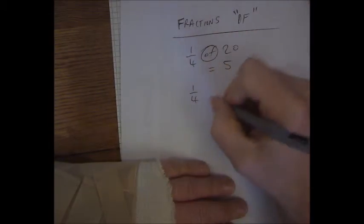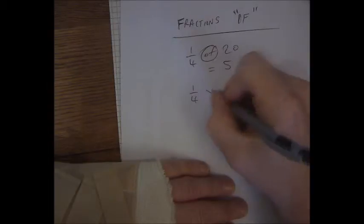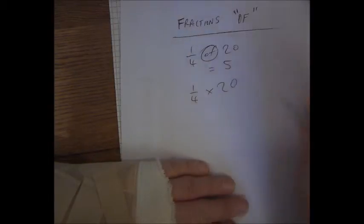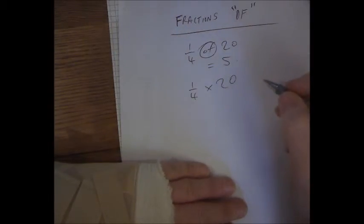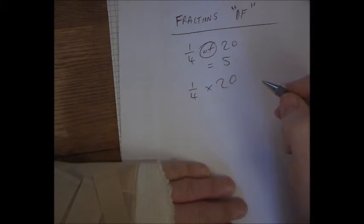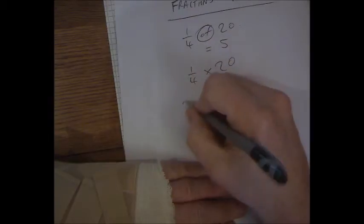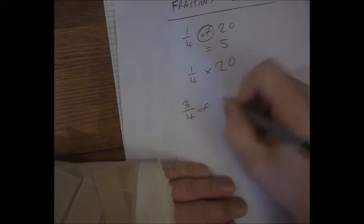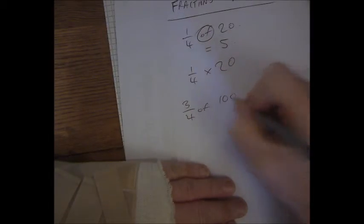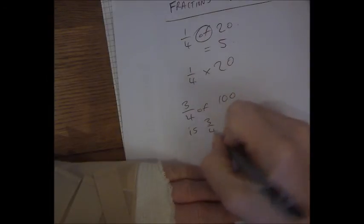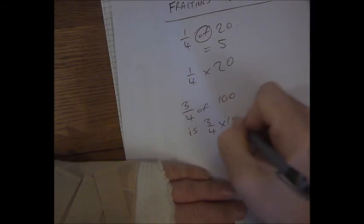You then handle that using the fractions method. So that's how you work out a certain fraction of an amount. For example, 3 quarters of 100 is 3 quarters times 100.